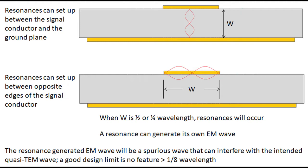The bottom picture shows another type of resonance — instead of resonance due to substrate thickness, it's due to conductor width. It's a left-to-right edge bouncing standing wave that causes resonance, and that energy will corrupt the energy you want to propagate. As a general statement, the W dimension needs to be one-eighth wavelength or smaller — one-tenth would be very safe. When these numbers are around a quarter wavelength or half wavelength, you're going to have resonances that disturb and corrupt the signal you do want.